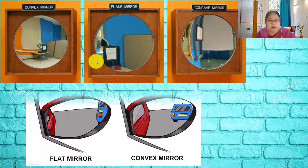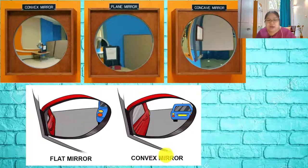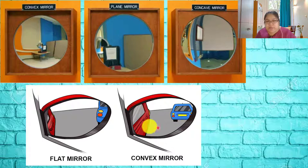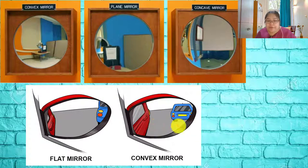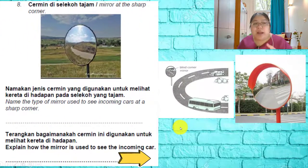For a car side mirror, using a flat mirror means you can only see a limited area beside you. Using a convex mirror, the visible area becomes wider but the size of objects appears smaller. This allows the driver to see more — including the whole car next to them.